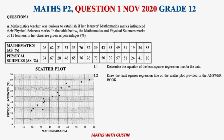Looking at the question, we're given a scatter plot and a diagram. A mathematics teacher was curious to establish if her learners' mathematics mark influences their physical sciences mark. In the table, the mathematics and science marks of 15 learners are given as percentages. The question is divided into 1.1 up to 1.6, so please stick around. Let's go ahead and look at 1.1.